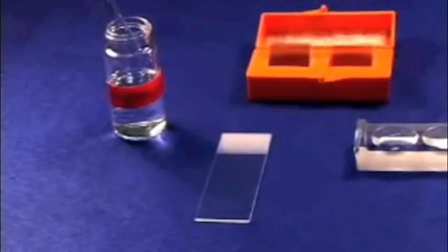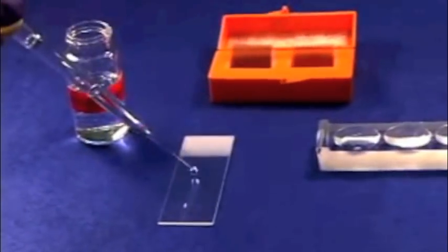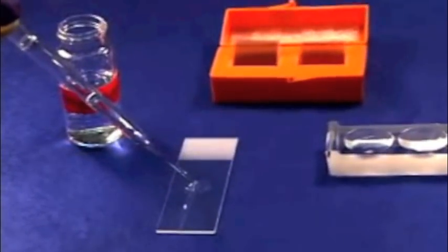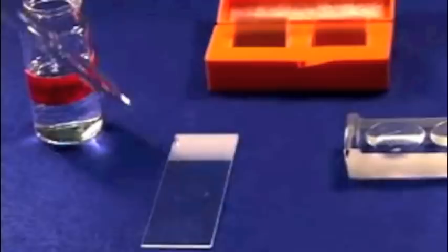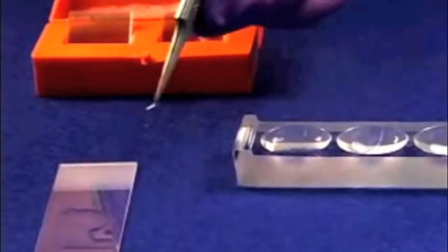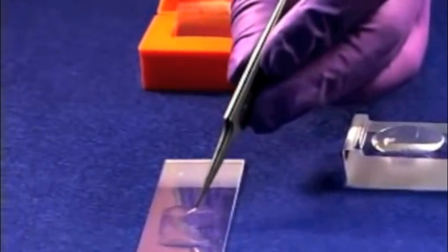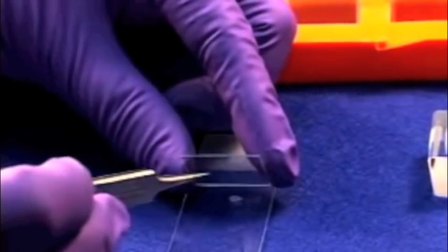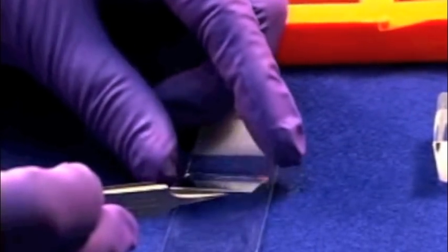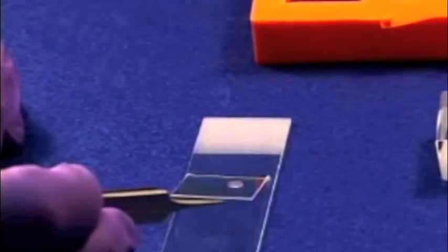Pull some mounting medium into a Pasteur pipette and place a small drop on the slide. Next, carefully pick up the brains by holding the connectives and place it in the mounting medium on the slide. Now lower one side of the cover slip into the edge of the mounting medium and very gently and slowly lower it over the brain to minimize the bubbles in the solution.